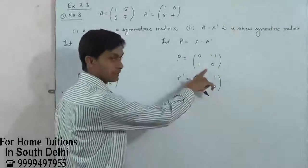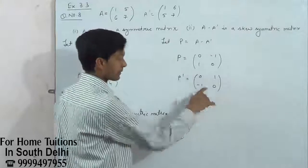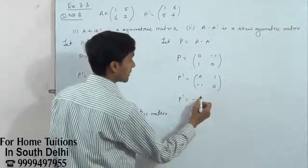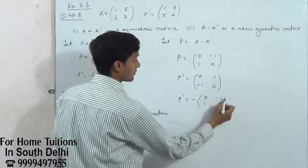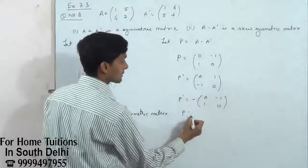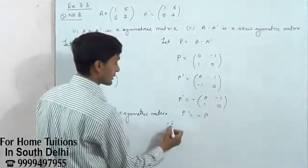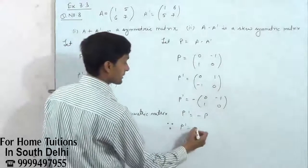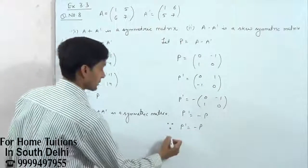No, it's not. This is P dash. But if you multiply by minus, you get: zero, minus one, one, zero. So this is P. So P dash equals minus P. Since P dash equals minus P, therefore...